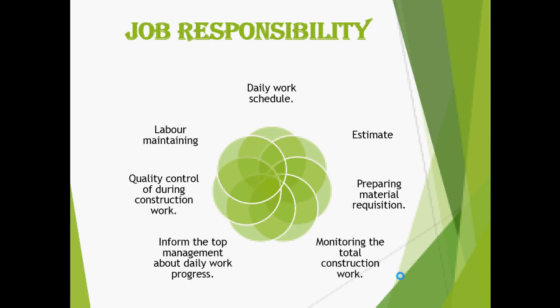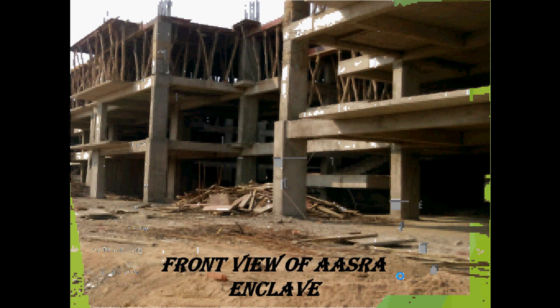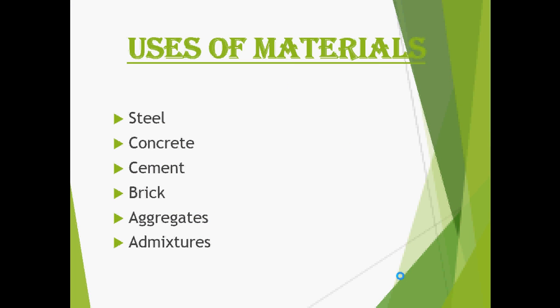These are the job responsibilities followed in any project construction. This is the Gantt chart which shows the progress of the project through dates, including all the activities done during the project. You can see the front view of ASTRA Enclave, which consists of three floors.